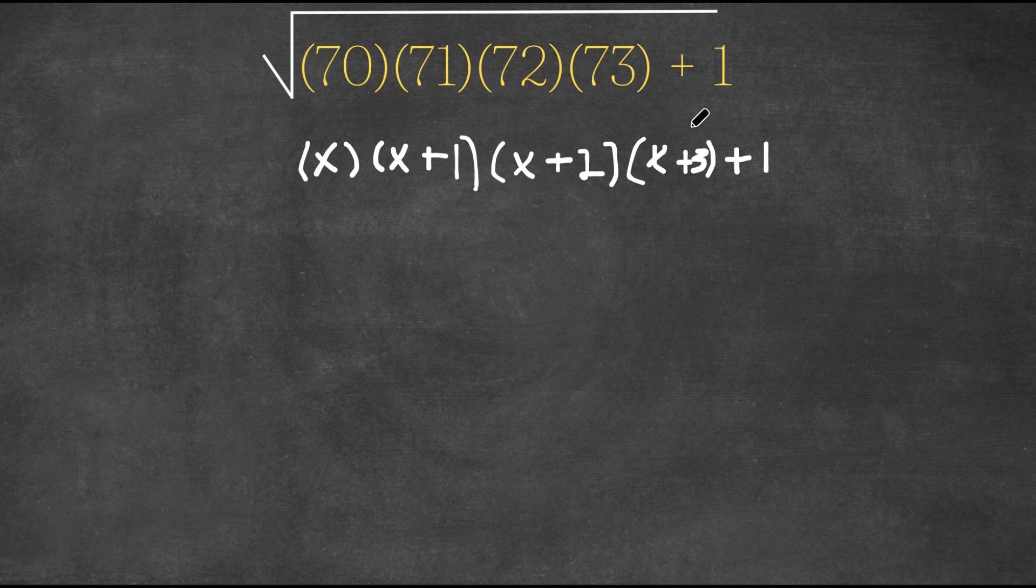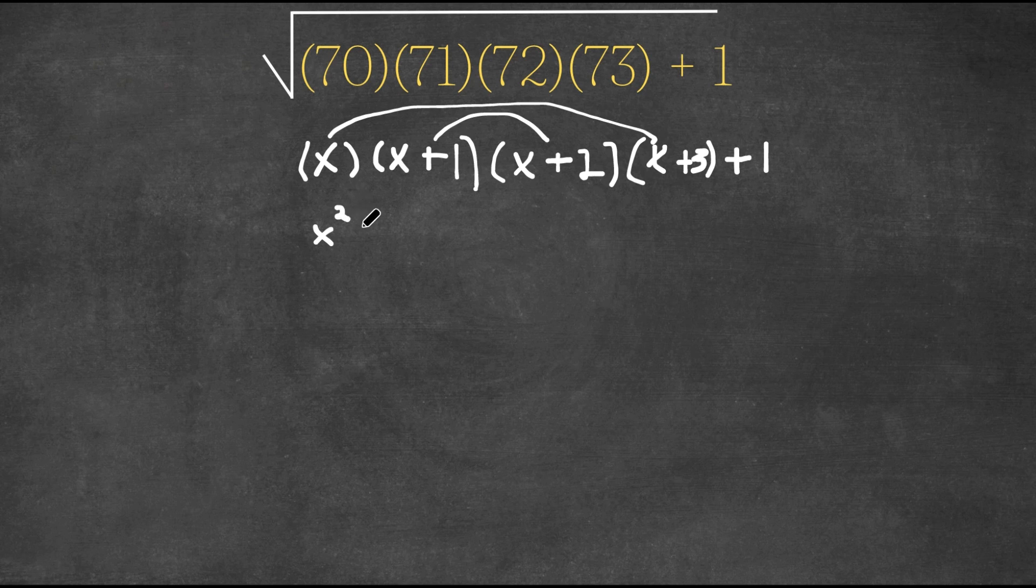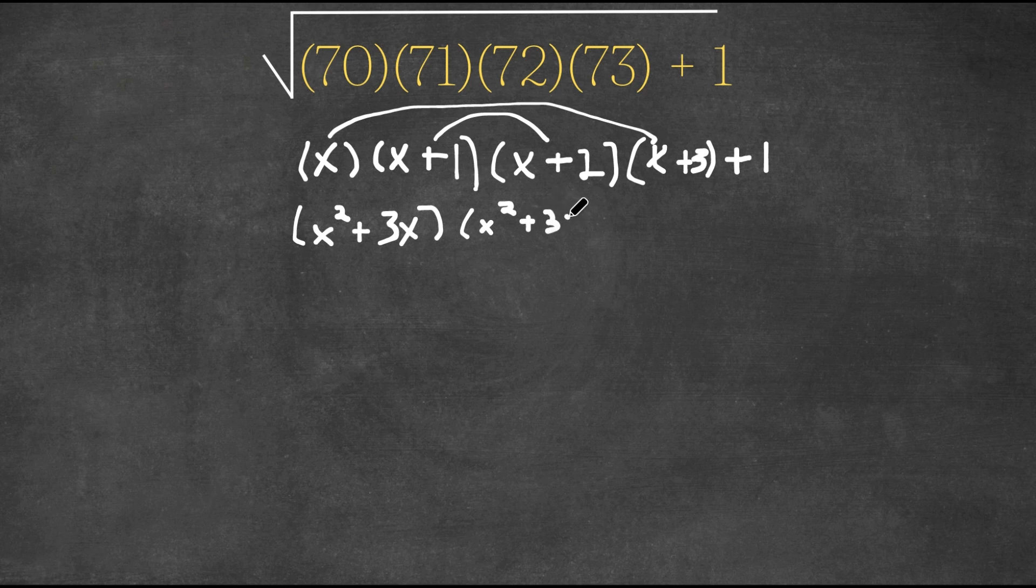So now, if I multiply x with x plus 3 and x plus 1 with x plus 2, I would get x squared plus 3x times x squared plus 3x plus 2, plus 1.